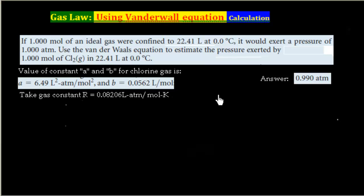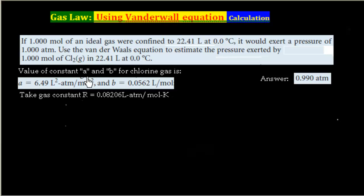This question is related to the Van der Waals equation. The question says: if 1 mole of an ideal gas were confined to 22.41 liters at 0 degrees centigrade, it would exert a pressure of 1 atmospheric pressure. Use the Van der Waals equation to estimate the pressure exerted by 1 mole of chlorine gas in 22.41 liters at 0 degrees centigrade. The values of Van der Waals constants A and B and gas constant R are also given.